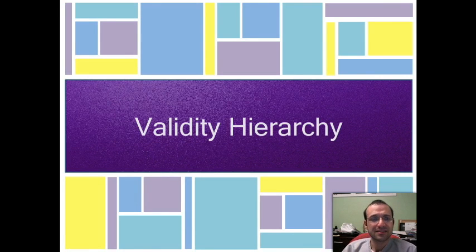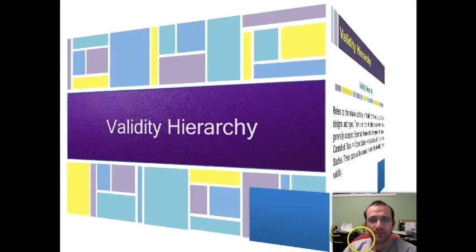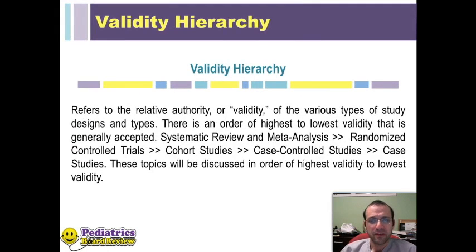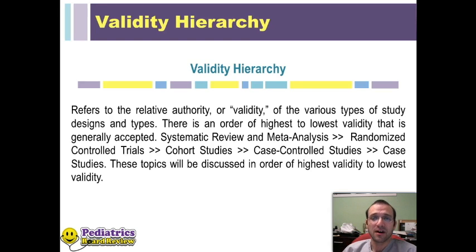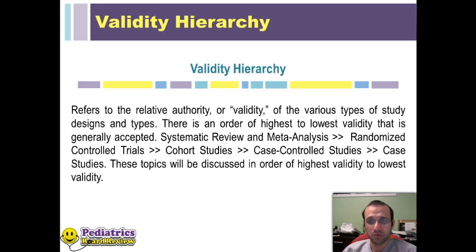The last section in the statistics chapter is validity hierarchy. The validity hierarchy among study designs is essentially a ladder of relative authority or validity between designs. It's important to know why these different types of designs are more or less valid — the boards will ask you to differentiate between them and to know which test is best given the population offered. The highest validity is a systematic review with or without a meta-analysis, then a randomized controlled trial, then a cohort study, then a case-controlled study, and finally a case study or case series. We'll talk about each of those individually.